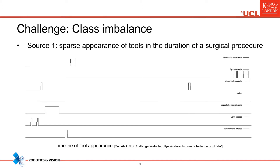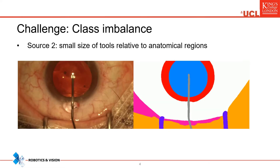The main challenge present in the CADIS dataset is class imbalance, which can come from three separate sources. The first is related to the sparse presence of tools during the procedure. The image shows the sporadic appearance of tools such as forceps — for most of the procedure they are invisible, then they appear for a few frames and disappear again.